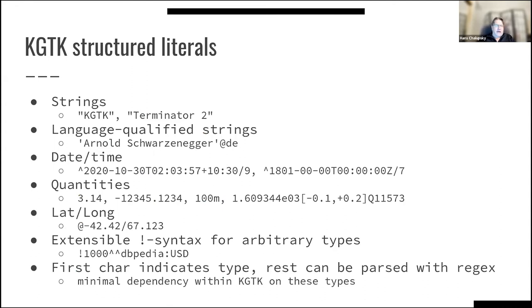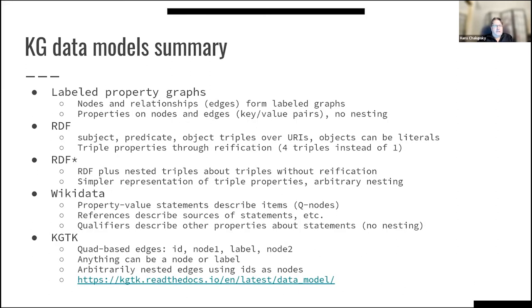We have a second piece of the data model: structured literals that represent commonly used low-level data types such as strings, language-qualified strings, datetime literals, quantities, and lat-long. We also have an extension syntax so you can add your own types — for example, a DBpedia dollar currency type. This is designed for simplicity: you can basically determine by the first character what type of literal you're dealing with, and the rest can be parsed with a regular expression. There's minimal dependency within KGTK on these types, so you can still use standard Unix tools.